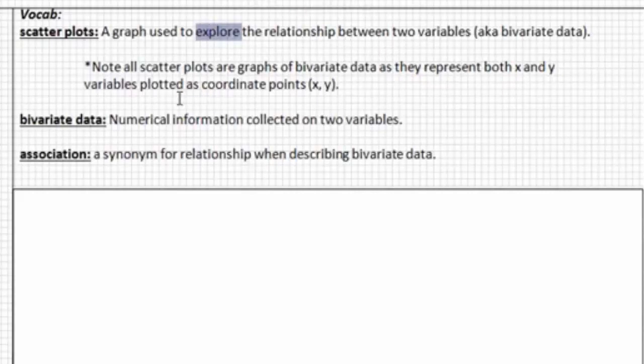And I really like that added into the definition. So I just have a little note here that it's important to realize that all scatter plots are graphs of bivariate data, as they represent both x and y variables plotted as coordinate points (x, y). So when you're looking at a point, you're looking at where those two variables meet, and so that is the beginning of exploring that relationship.